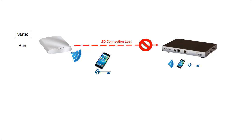If the access point loses connectivity to the Zone Director, the access point will change its state to 'sole run'. In this state, clients that have already been associated to the access point and WLAN will maintain their connection. However, new clients attempting to associate will not be able to, because client details and key information are kept on the Zone Director - so for a standard WLAN, that information cannot get back to the Zone Director and the association will be denied.